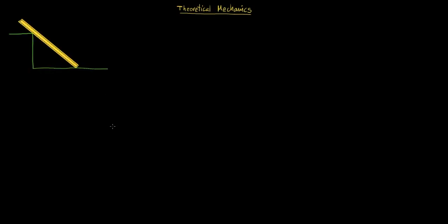Let's start with exercise 1. A homogeneous rod of weight MG and length 2L leans against the wall through a horizontal cable as shown below. Calculate the components of the reaction R' and the tension T. Here we have a string, in terms of alpha, H — this distance — L, M, and G.